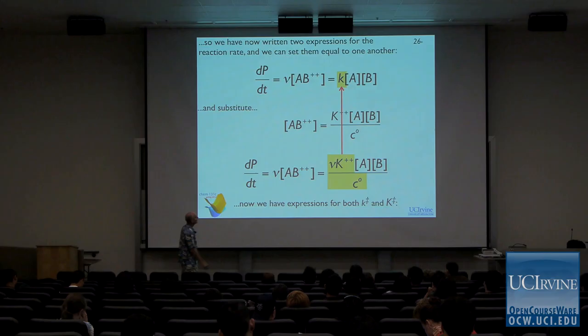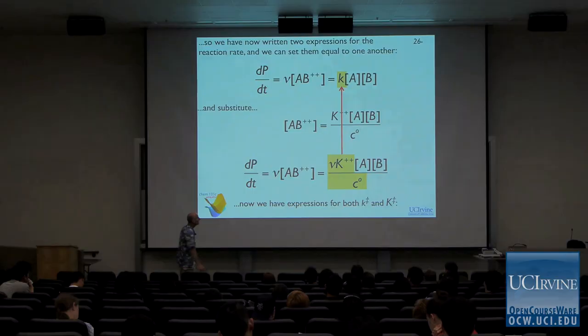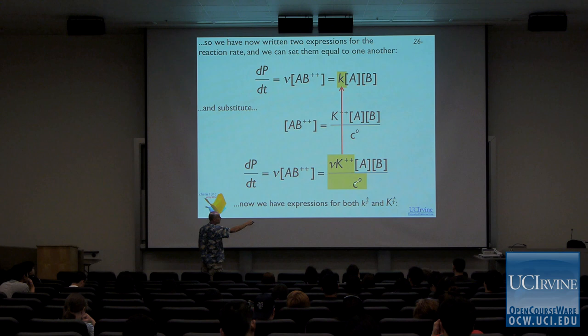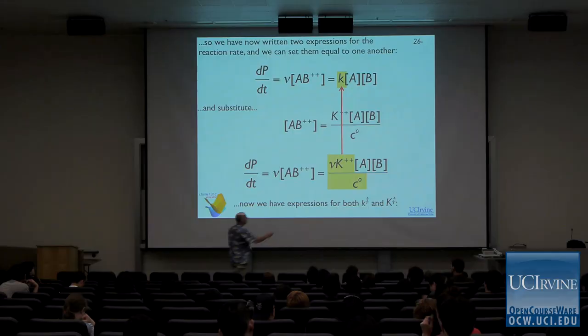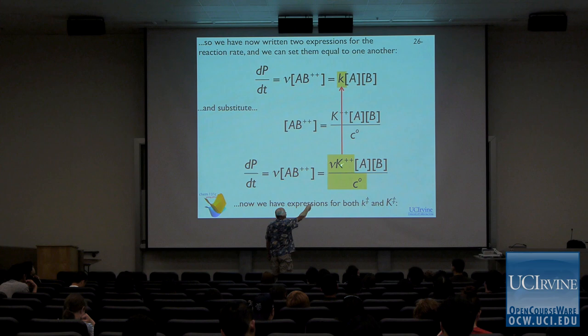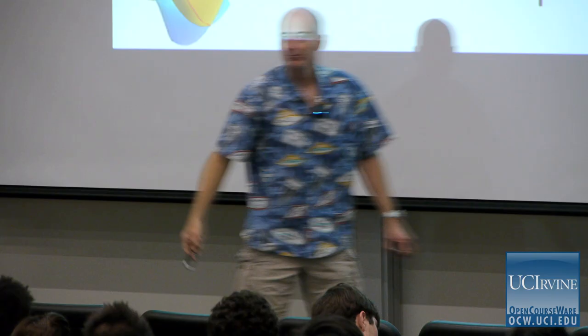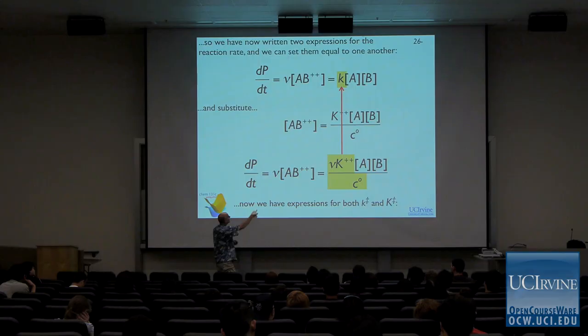In essence, the phenomenological rate expression for A plus B going to products has a rate constant k given by: this frequency times the equilibrium constant K double-dagger divided by the standard concentration term — just to keep the units right. The important thing is that these two parameters relate directly to physical parameters of the transition state that we can think about calculating. In other words, we can calculate this rate constant from fundamental properties of the transition state.